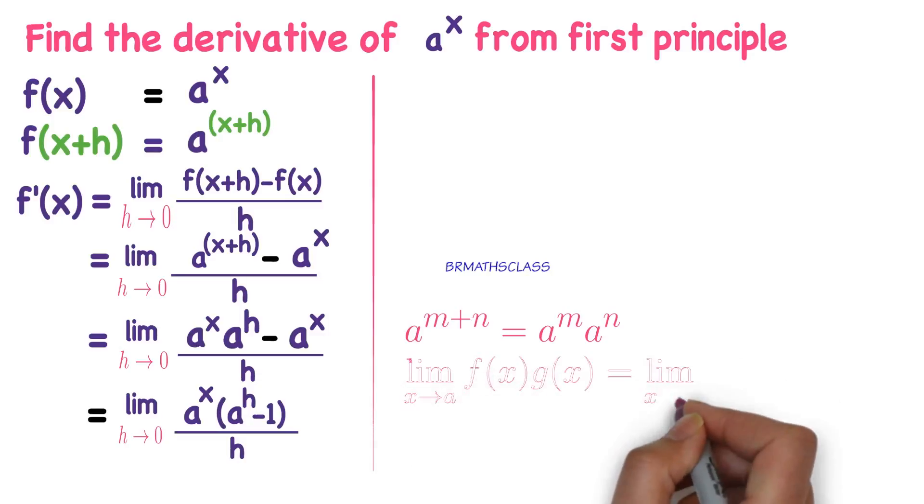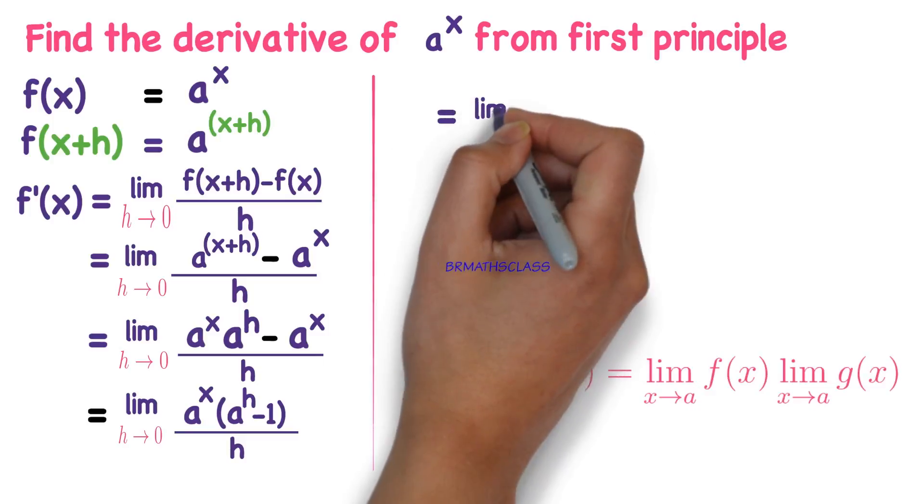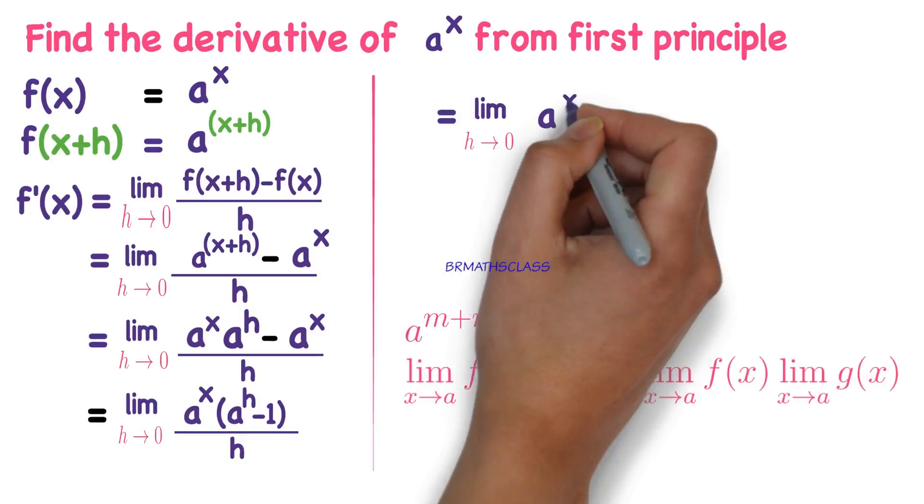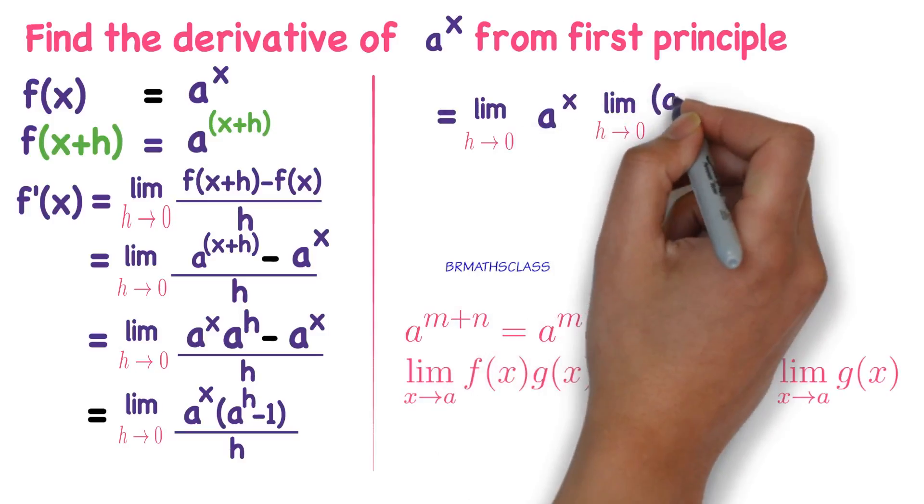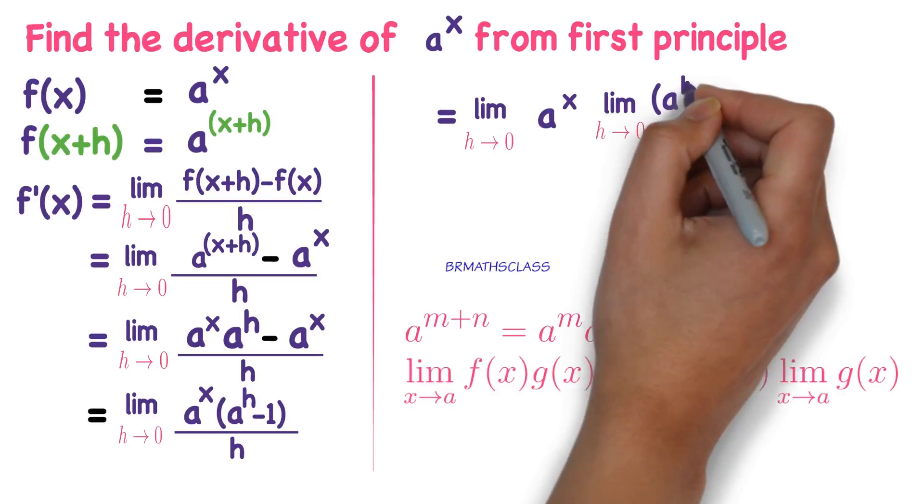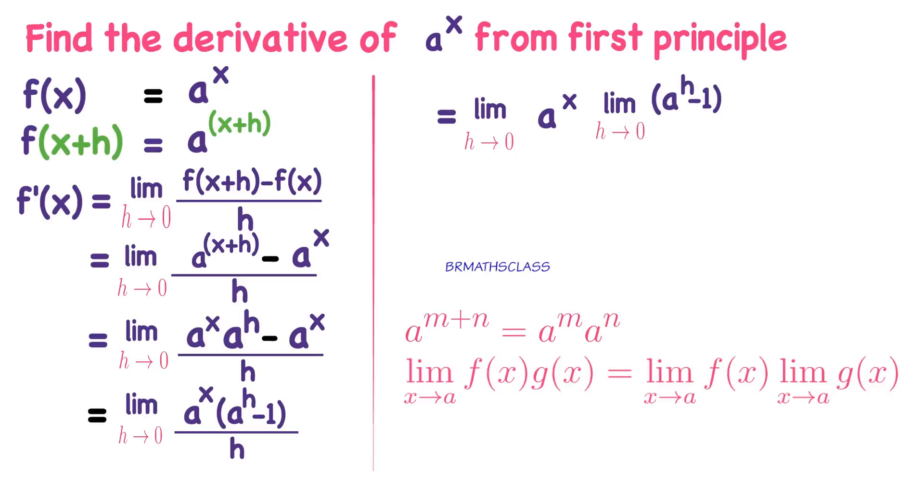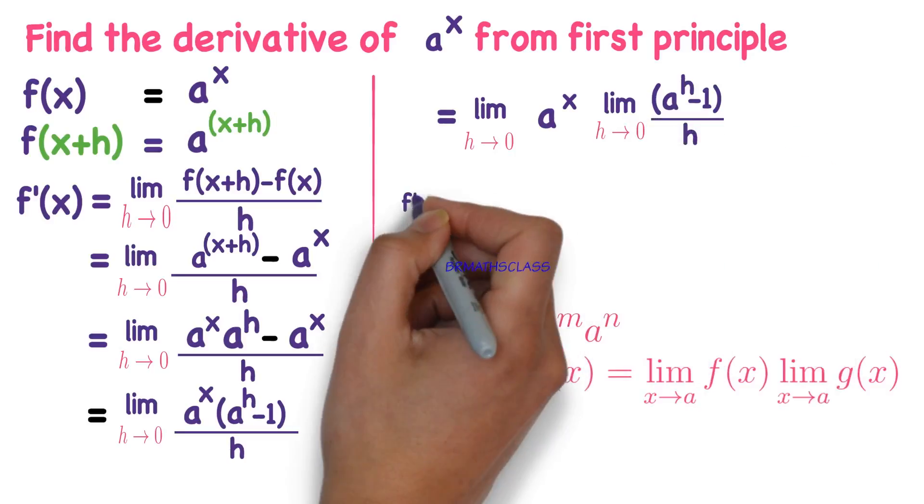Now we know this formula. Limit h tends to a, f of x into g of x equals to limit h tends to a, f of x into limit h tends to a, g of x. Now we apply this formula here. Limit h tends to 0, a power x into limit h tends to 0, a power h minus 1 divided by h.